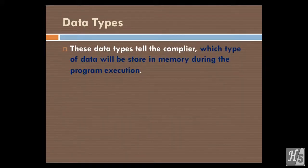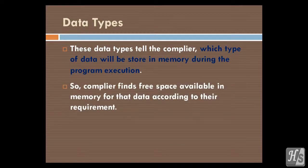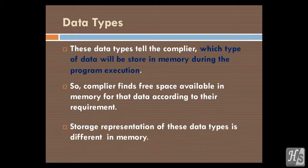These data types tell the compiler which type of data will be stored in memory during the program execution. So compiler finds free space available in memory for that data according to their requirement. Storage representation of these data types is different in memory.